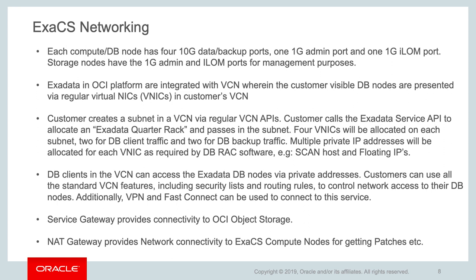Customers may deploy a VPN through Cisco IPSec connectivity or Fast Connect options to connect from their data center to Oracle Cloud Infrastructure. A service gateway provides connectivity to OCI Object Storage, which is used for cloud backup on Exadata. A NAT gateway provides network connectivity to Exadata Cloud Service compute nodes for obtaining required patches and updates. Connections can be initiated from Exadata nodes to the outside, but inbound connections to the Exadata system are blocked due to network address translation.